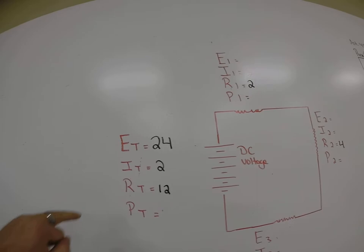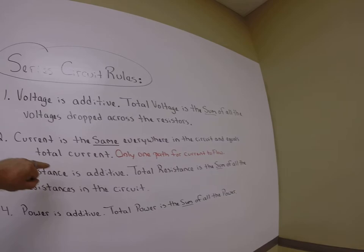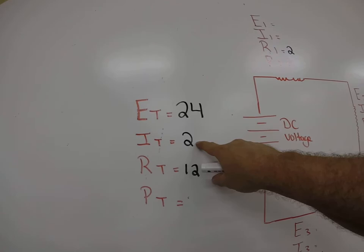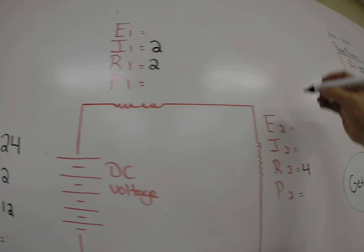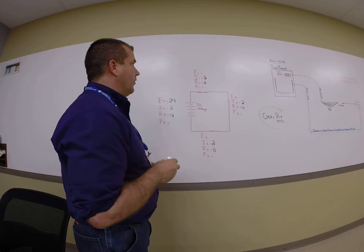That's great because in a series circuit, current is the same everywhere in the circuit. So IT equals I1 equals I2 equals I3 — current is the same everywhere in the circuit and equals the total current because there's only one path for current to flow. So I know I can put this 2 everywhere in the circuit: 2 amps, 2 amps, 2 amps. Now you can start to see how easy this is going to get — if I've got any two quantities in any formula, I can find the third.